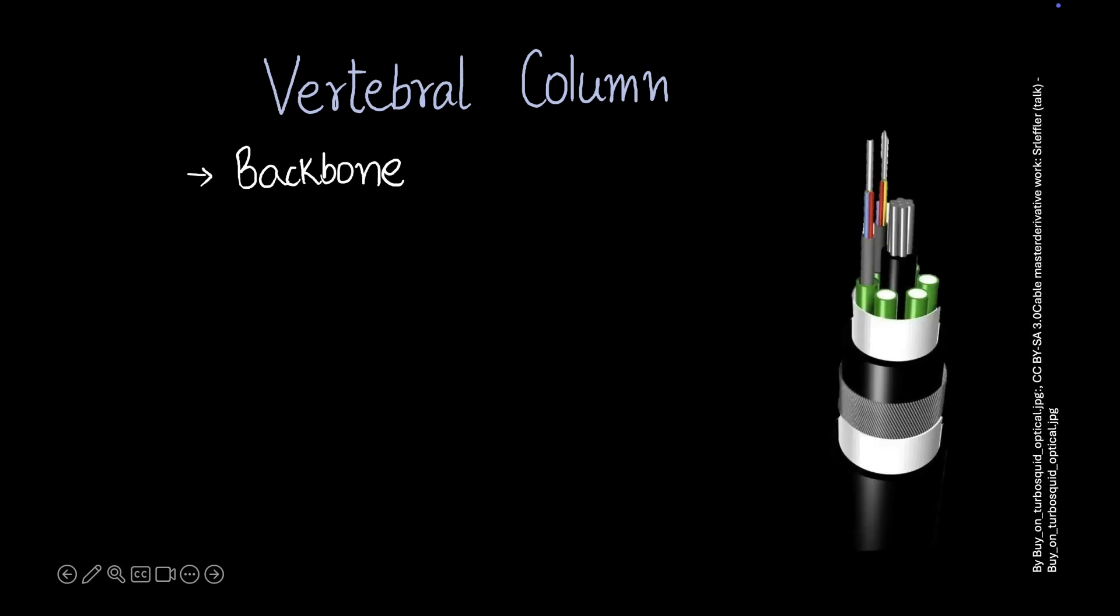You might be wondering why there's a picture of a wire when we're talking about the vertebral column. This part of the wire is the part that carries signal - it carries our data or carries current. This outer part is for protection. This is a protective sheath that merely ensures that the wires carrying the signals don't get disturbed or harmed or cut. The vertebral column is very similar to this.